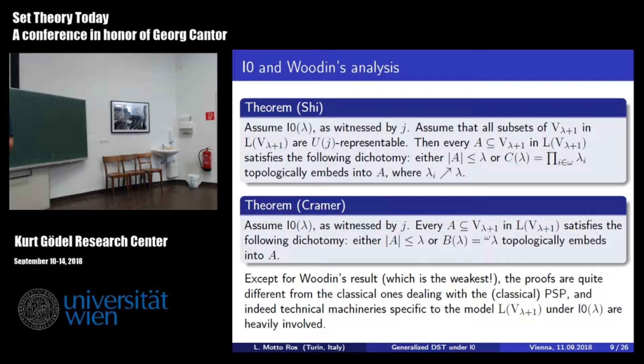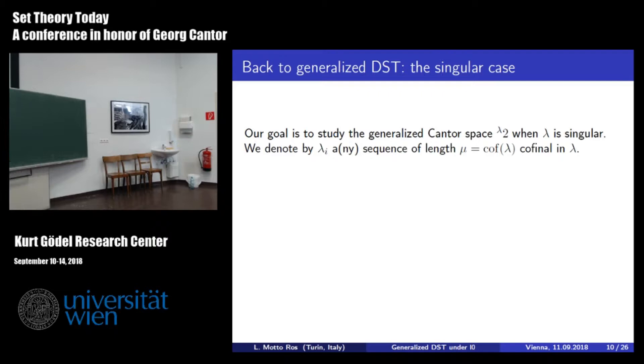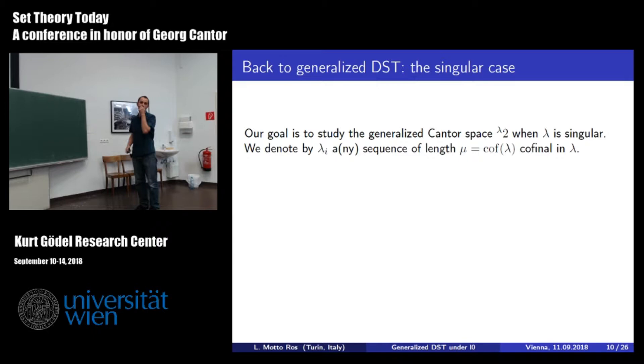I cannot follow Cramer's proof because I'm new to the subject—they use a lot of machinery specific to this large cardinal. But I will show you something which reproves part of this result. Now, let's go back to generalized descriptive set theory and work with singular cardinals, as Mirna, Woodin, and others suggested. What can you prove? As an easy exercise, if lambda is singular and you take any cofinality sequence lambda_i, you can immediately prove that the generalized Cantor space is equivalent to the product over the cofinality of lambda of the cardinals lambda_i^{lambda_i}.